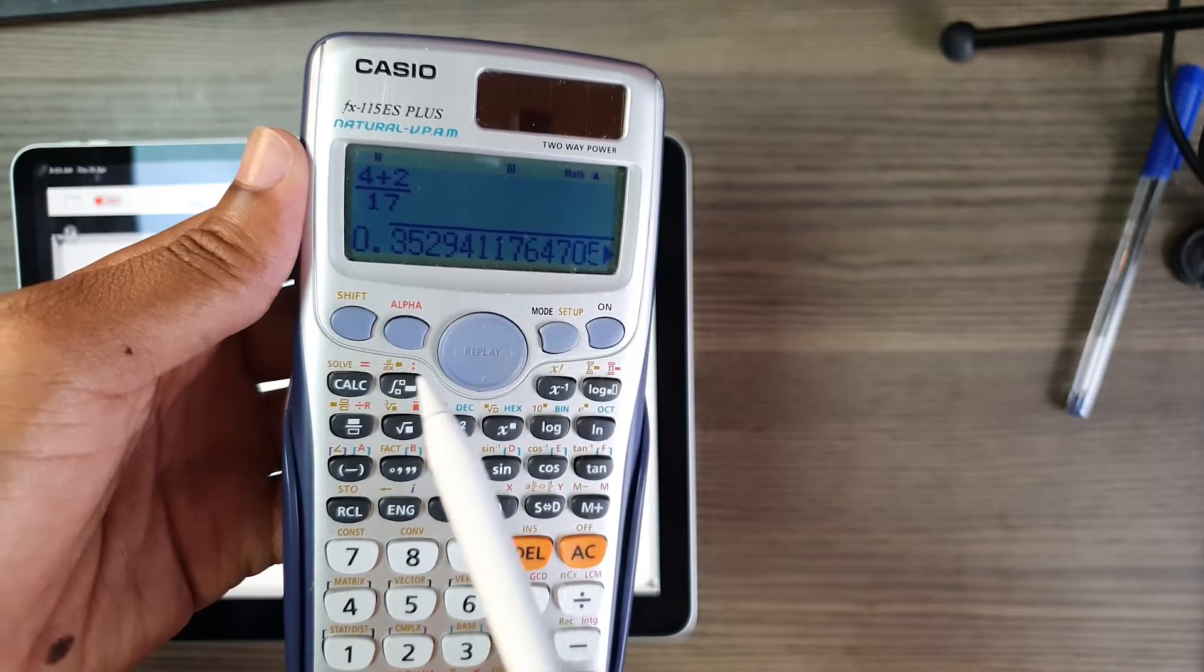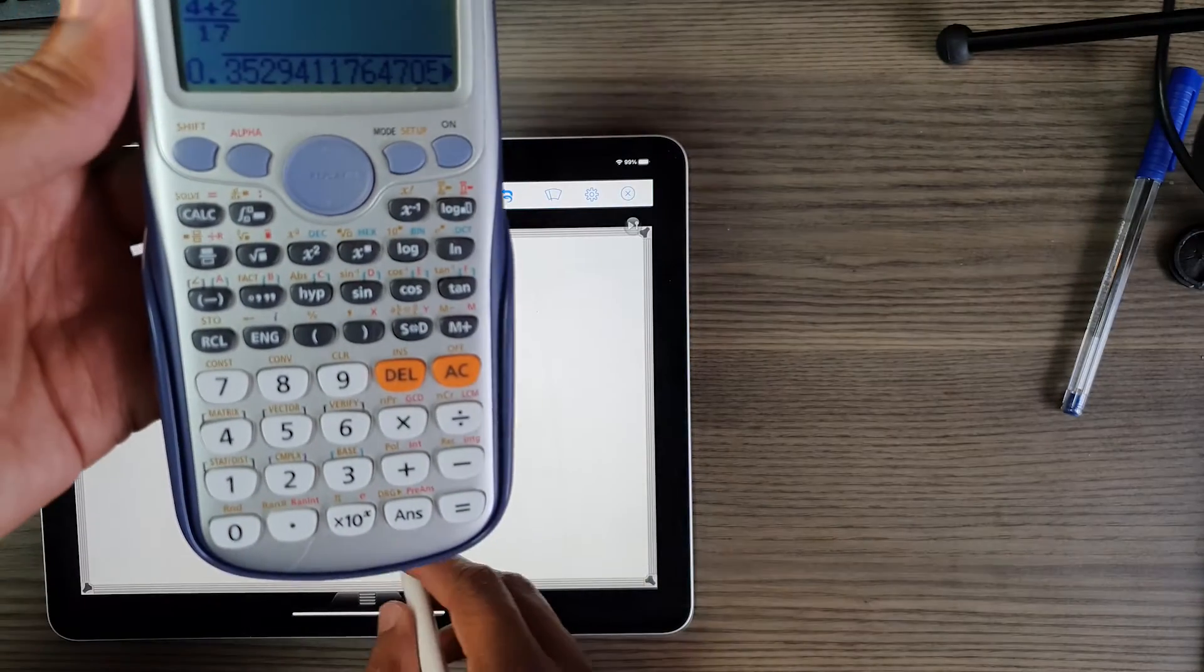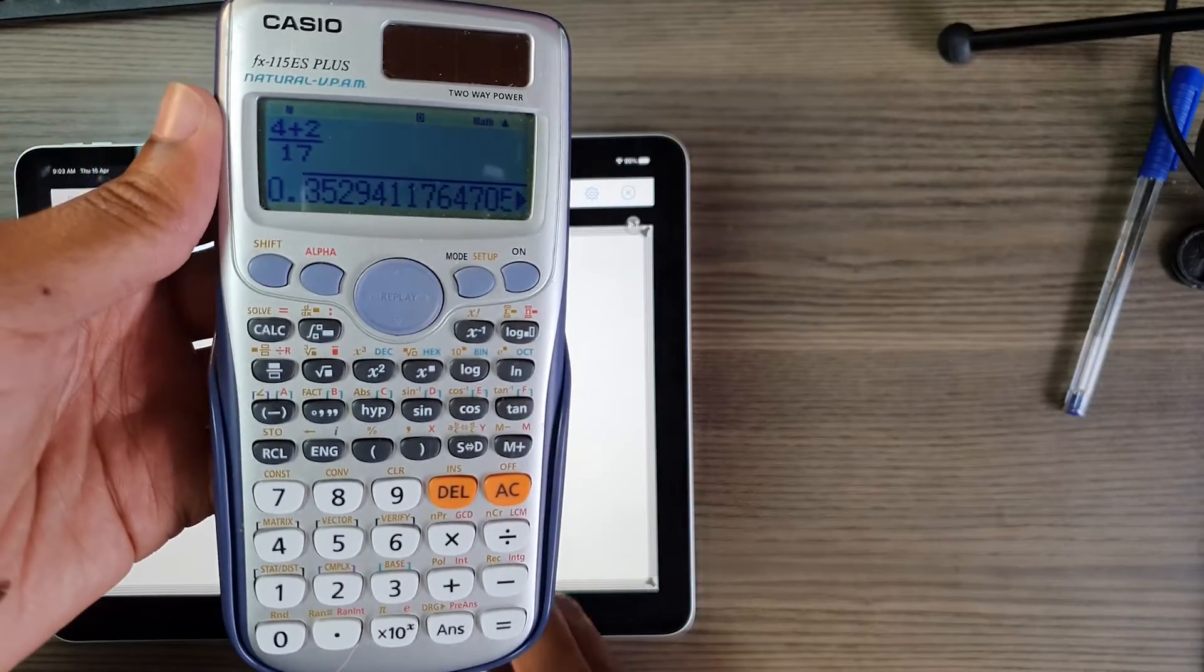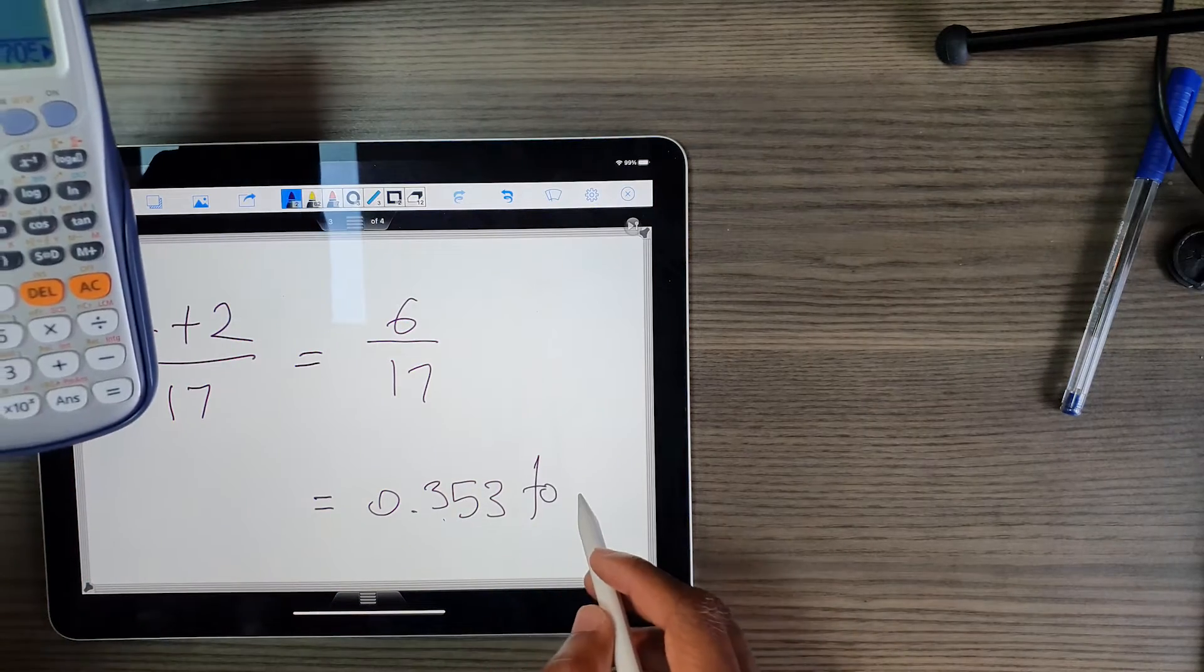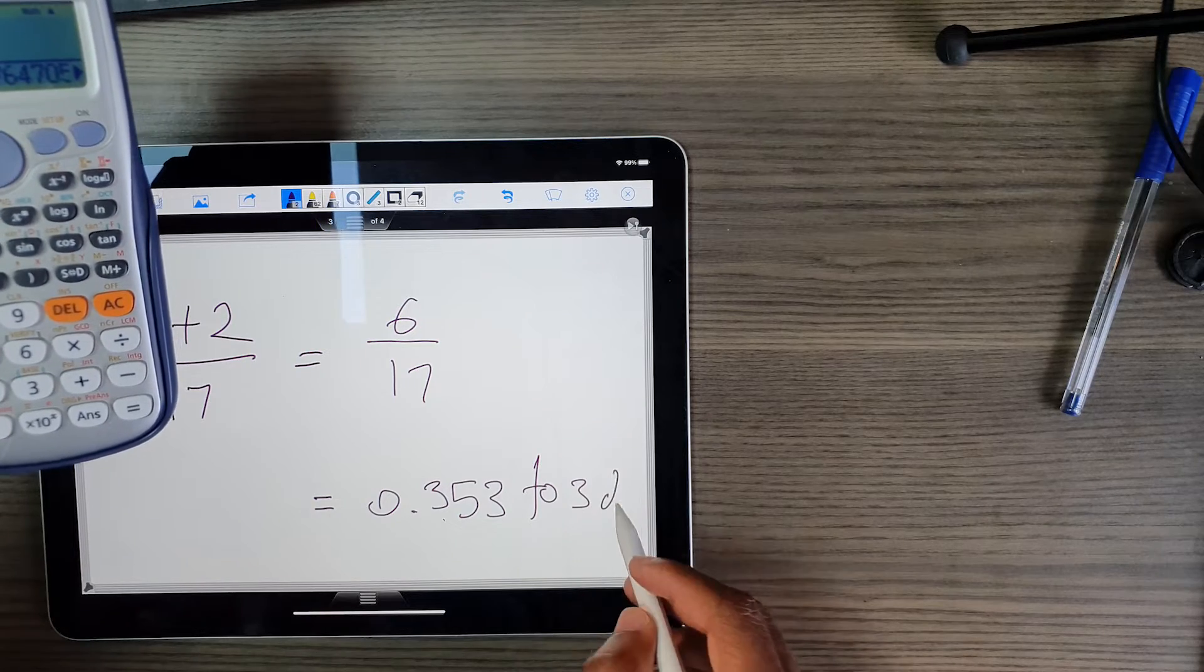So we can go to maybe three decimal places, 0.353. Three decimal places, to three significant figures in this case as well.